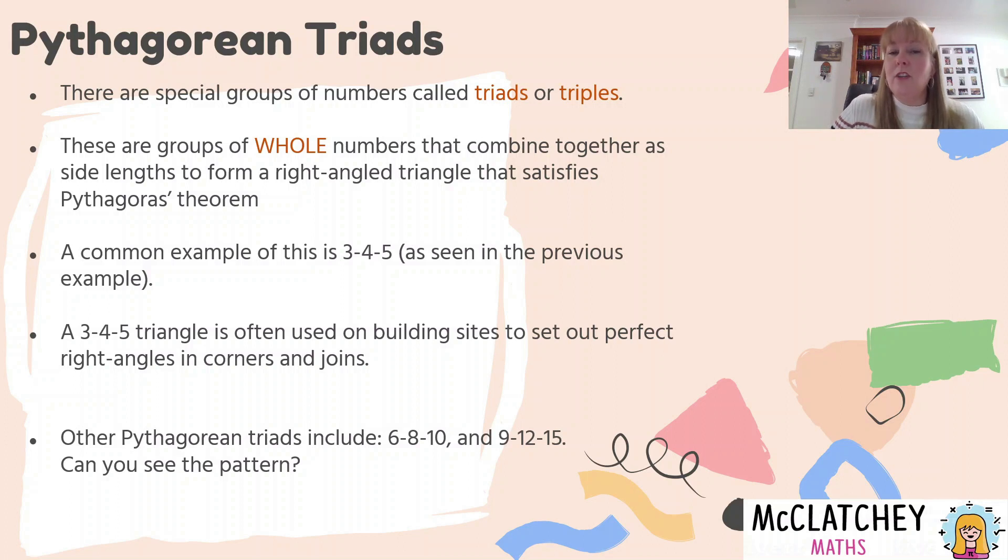Now there is a pattern, you can see it building from three, four, five to six, eight, ten, and nine, twelve, fifteen. Do you know what the pattern is? Pause it, see if you can work it out. Well, as you can see, what's happening is, is that each of the numbers in that three, four, five is getting multiplied by a factor. So to get to six, eight, ten, we've actually doubled three, four, and five. And to get to the nine, twelve, and fifteen triad, we have actually tripled the three, four, five. So that actual principle works all the way along.